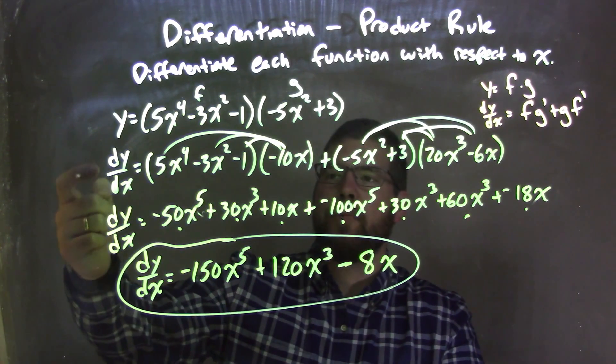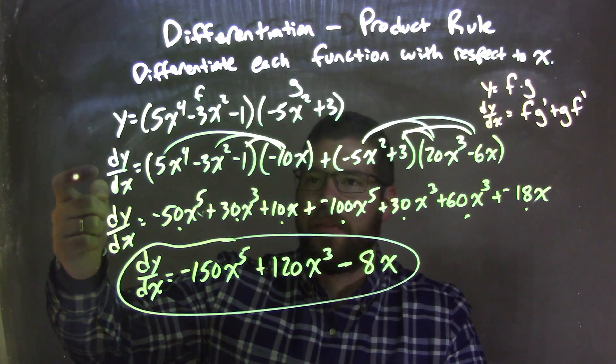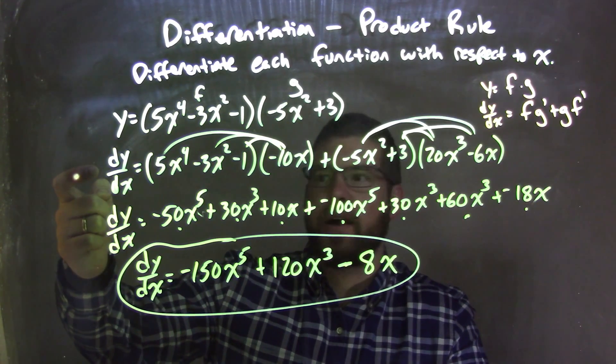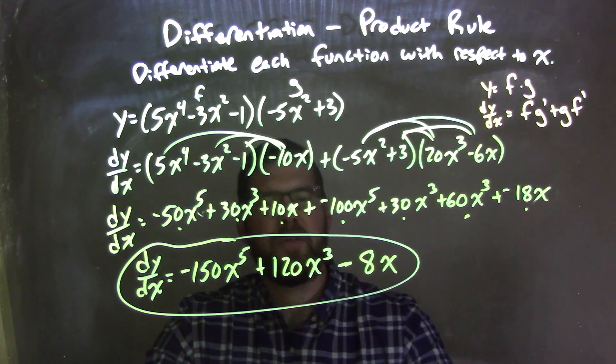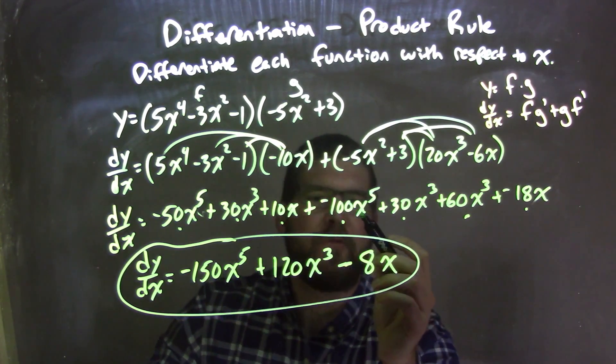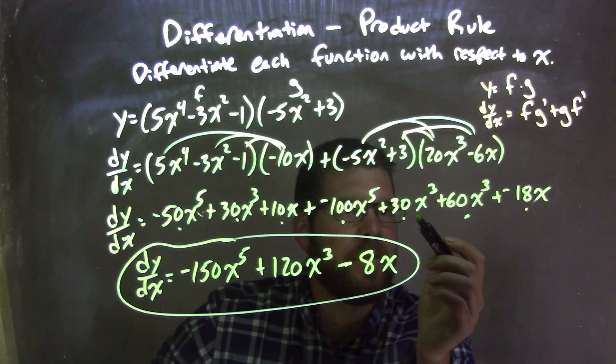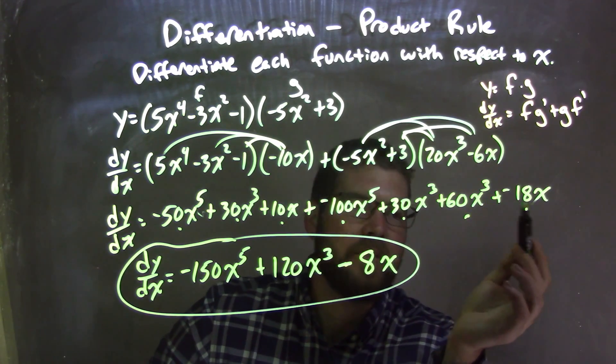And at this point, when I applied that, I have my derivative. Then it's just algebraic simplification. The simplification gave me negative 50x to the 5th plus 30x to the 3rd plus 10x plus negative 100x to the 5th plus 30x to the 3rd plus 60x to the 3rd plus negative 18x.